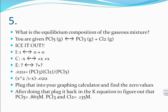After you plug that into your calculator and find the zero values after doing that you plug it right back into the K equation of equilibrium to figure out that PCl5 is equal to 0.6865 molar. PCl3 and Cl2 will have the same value of 0.135 molar. But again this is a plug and chug method and it should not take too much effort if you get the hang of things.